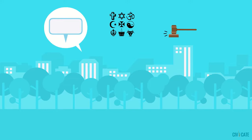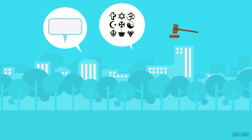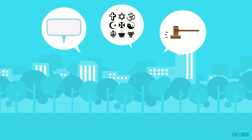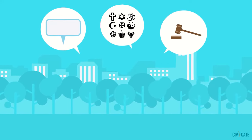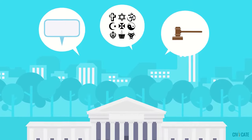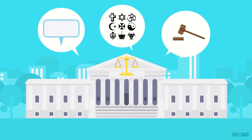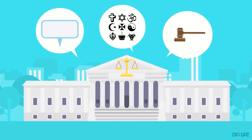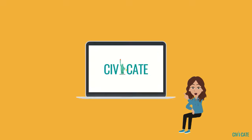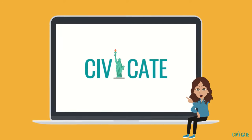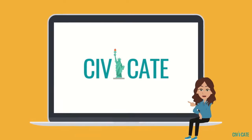So the right to free speech, freedom of religion, and the right to a fair court trial, for example, are civil liberties. They are protected by Supreme Court cases. There is more information about the Bill of Rights in our video on the Constitution.